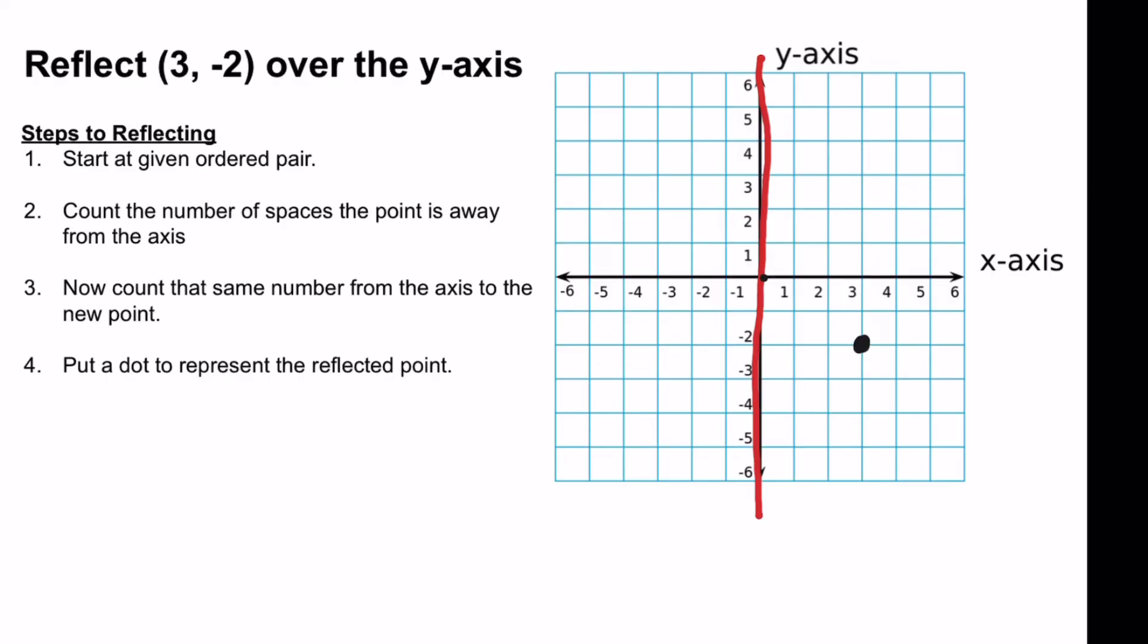And so this is 3, negative 2. And so in order to find the reflected point, we will need to count how many spaces our given point is away from the y-axis. And so this is 1, 2, 3 spaces away.